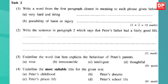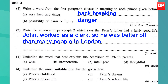Now let's look at Task 2: write a word from the first paragraph closest in meaning to each phrase given. Only look at the first paragraph. A: very hard and tiring — the answer is 'back-breaking.' B: possibility of harm or injury — the answer is 'danger.' The next question asks you to write the sentence in paragraph two which says that Peter's father had a fairly good life — the answer is: 'John worked as a clerk, so he was better off than many people in London.' In the third question, underline the word that best explains the behaviour of Peter's parents — wise, irresponsible, intelligent, or thoughtful. The correct answer is 'irresponsible.'